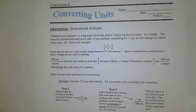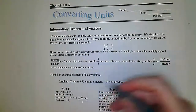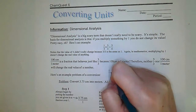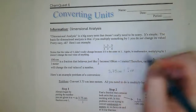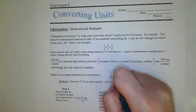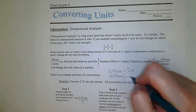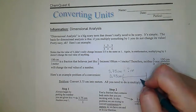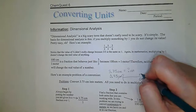Here's an example problem of a conversion: convert 3.75 centimeters into meters. All you need to do is multiply by a fraction. I would write it as 3.75 centimeters. We want to know how many meters it is, so I start with my given, which is 3.75 centimeters. Centimeters have to go on the bottom because they need to cancel out, and meters need to go on the top.